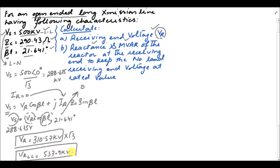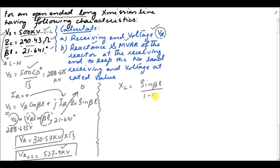So the receiving-end voltage when the line is open-ended is 537.9 kV, while the sending-end voltage is 500 kV. This confirms the Ferranti effect — there is increased voltage at the receiving end, approximately 37–38 kV above nominal. To reduce this voltage to the nominal value, we use the formula XL = Zc·sin(βl) / (1 − cos(βl)), with βl = 21.641° and Zc = 290.43 ohms.